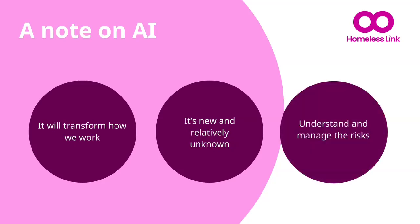We know that for generative AI to work best, it needs all of the things that you will do as you create your theory of change and case for support: clear parameters of who, what, when, where, why; clear identification of what is important for the ways that you work, like strengths-based approaches; and data on both need and impact. Remember that the insights of your organisation can't be found through AI, and they're often the most important things to communicate to funders, along with the concise statements that reflect your charity's voice. If you have spent time on these, then you will be ready to use generative AI to respond to specific questions once your charity has fully assessed and understood its role in your organisation.